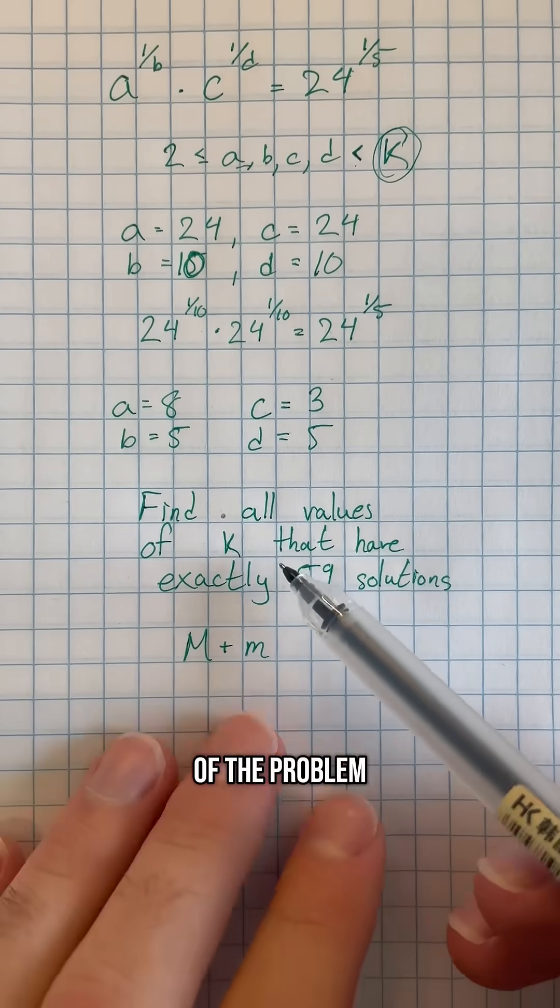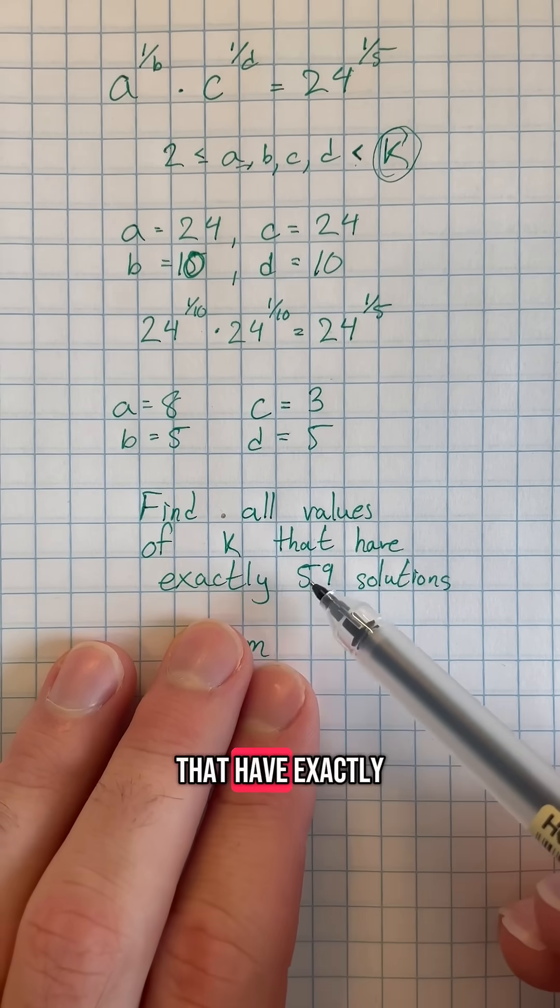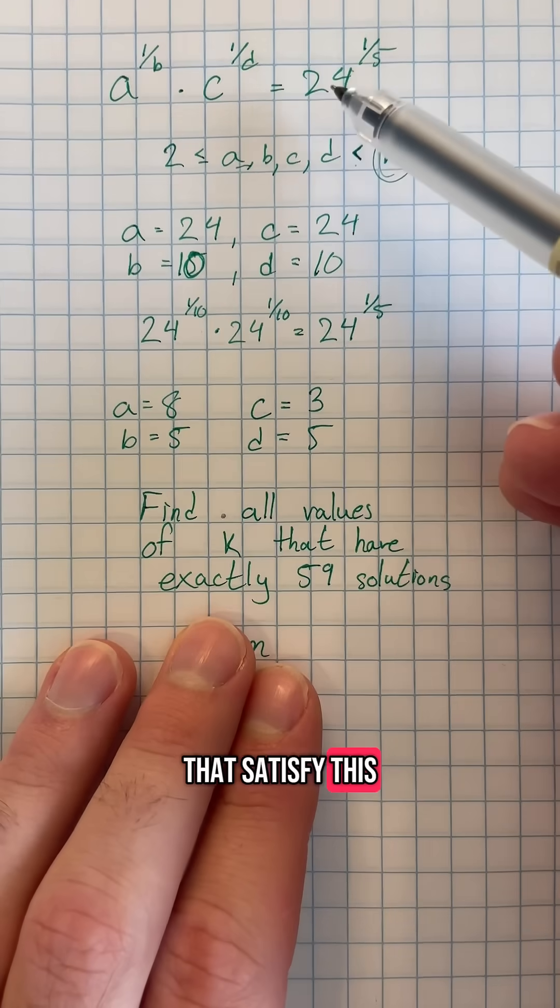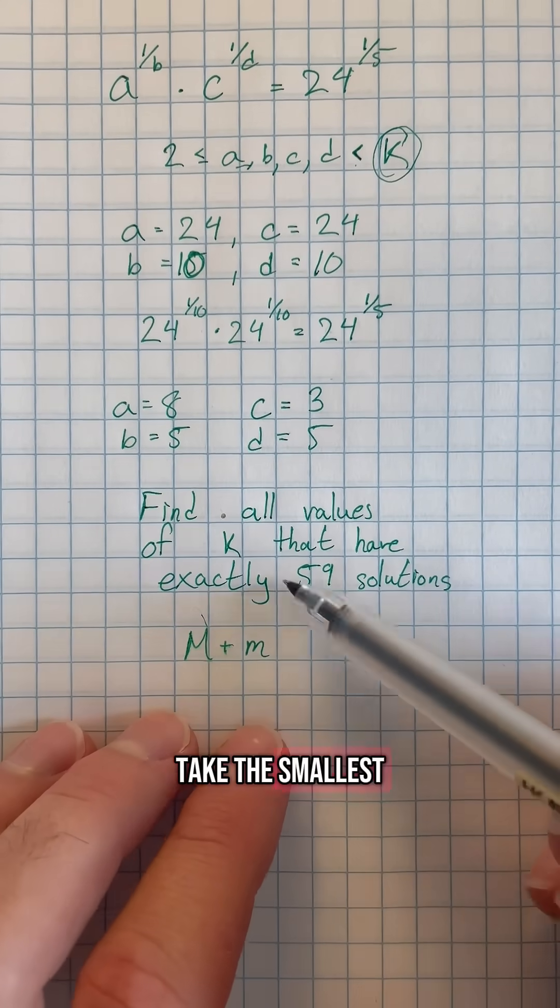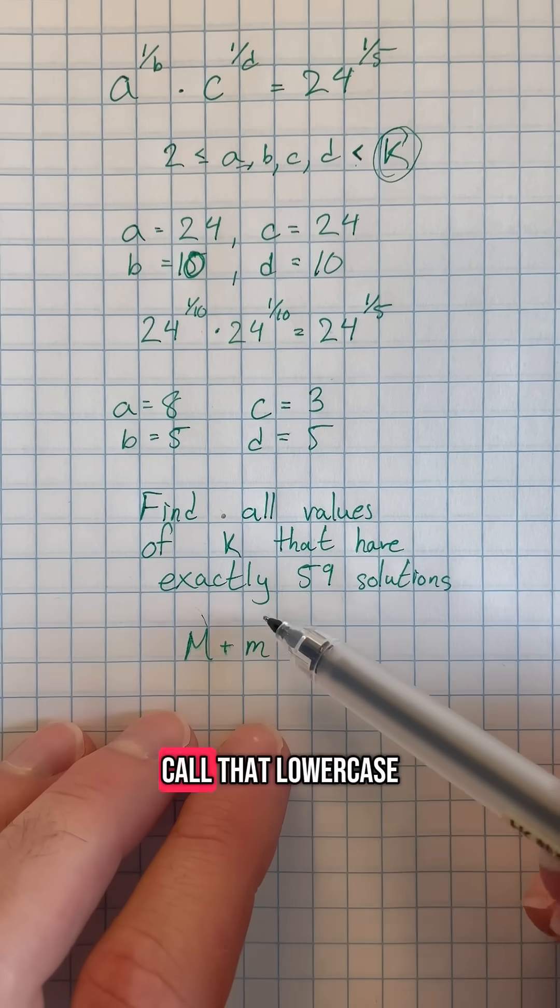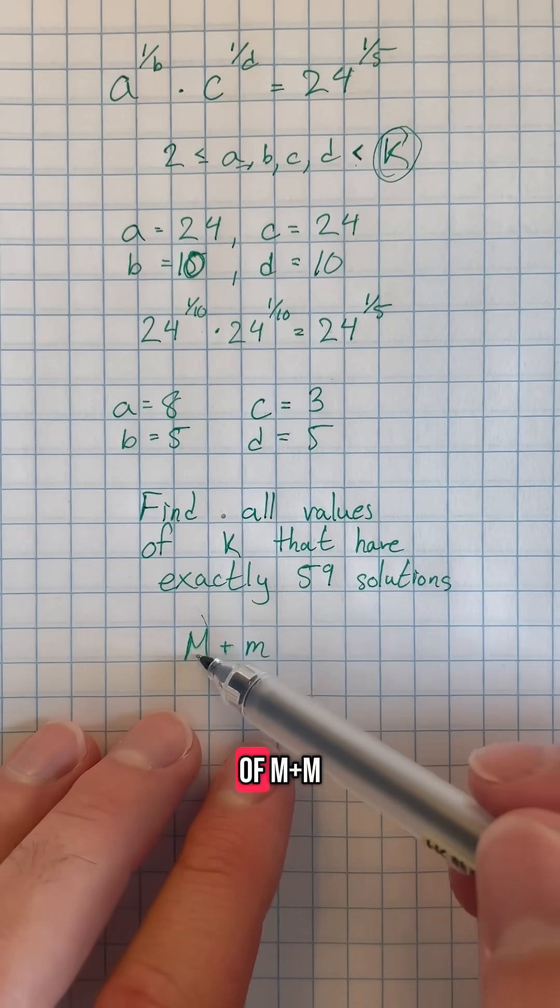The actual question of the problem is to find all possible values of k that have exactly 59 solutions that satisfy this equation, take the biggest one and call that capital M, take the smallest value of k that satisfies this call that lowercase m, and then the answer to the question will be the sum of M plus m.